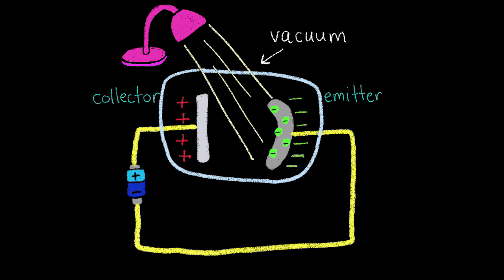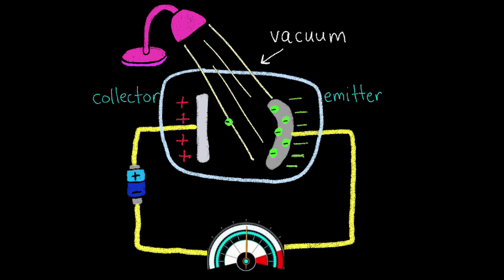A light is shown onto the emitter plate, freeing the trapped electrons. The energy carried in the light is transferred to the electrons, giving them the energy they need to jump off the emitter toward the collector. We can measure how many electrons are jumping off the emitter and onto the collector by placing an ammeter in the circuit.